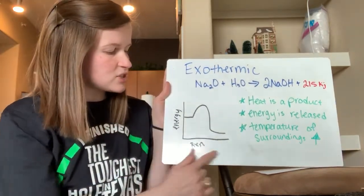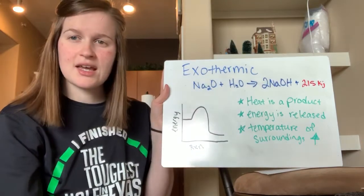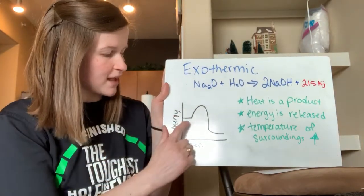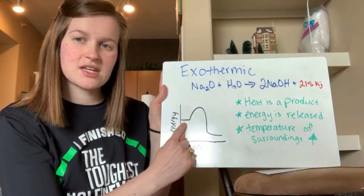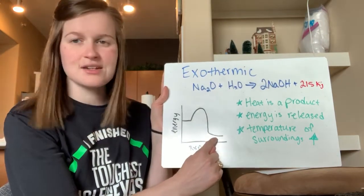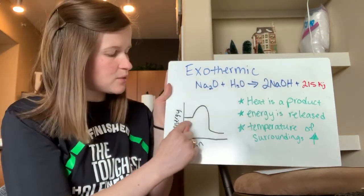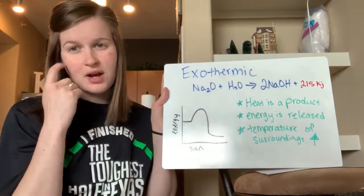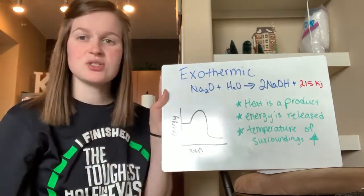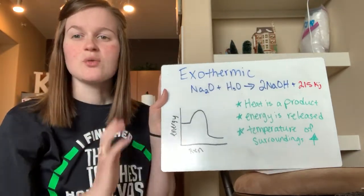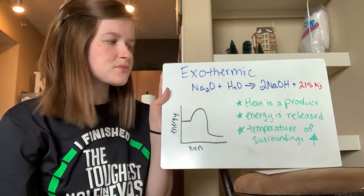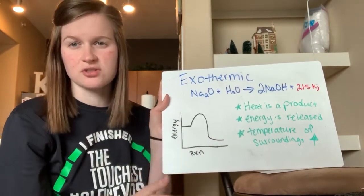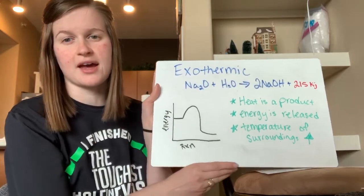Here's a basic energy diagram. I want to make sure you understand that your reactants are on the left-hand side and your products are on the right-hand side. The energy of the reactants is greater than the products, because this change is going to release that energy. All of this information supports each other and supports the definition of an exothermic reaction.